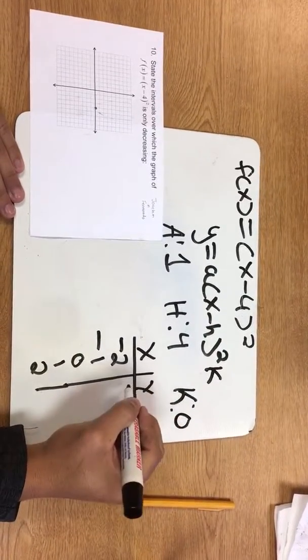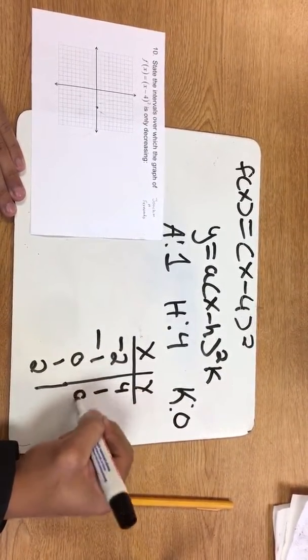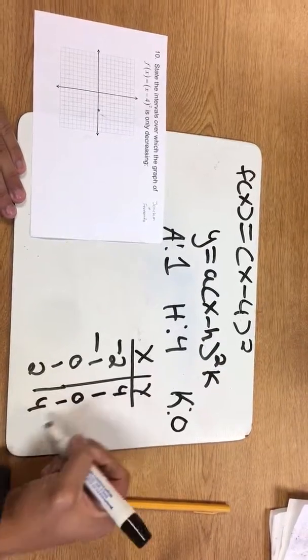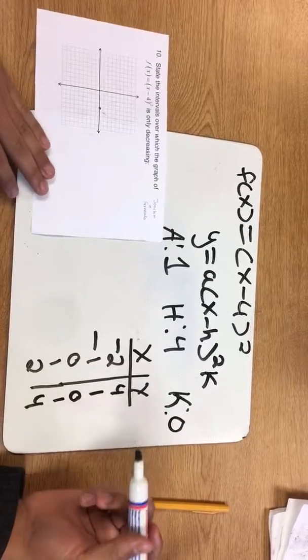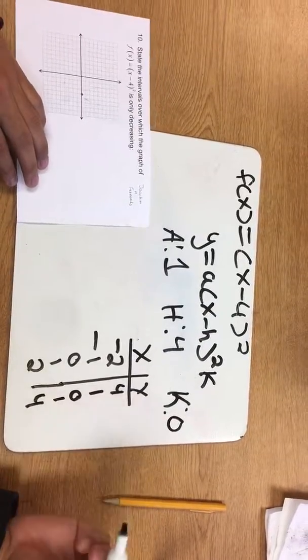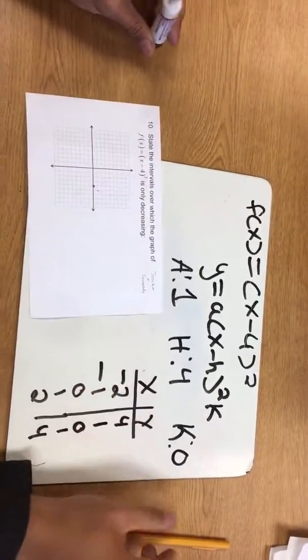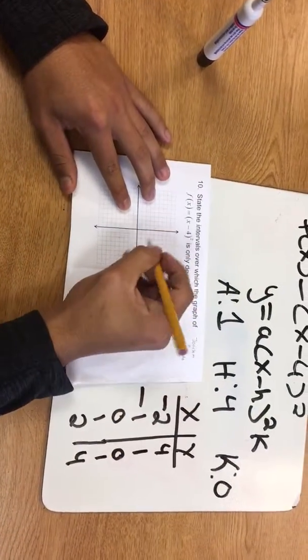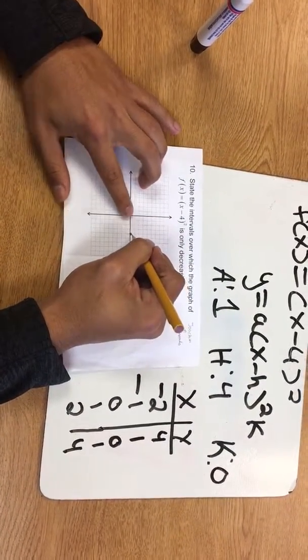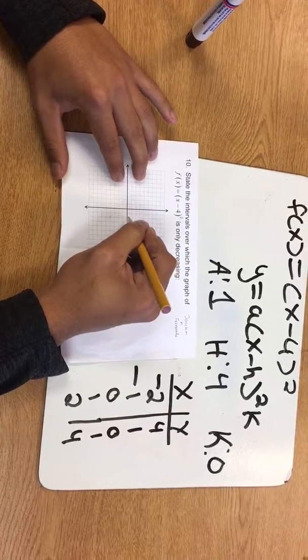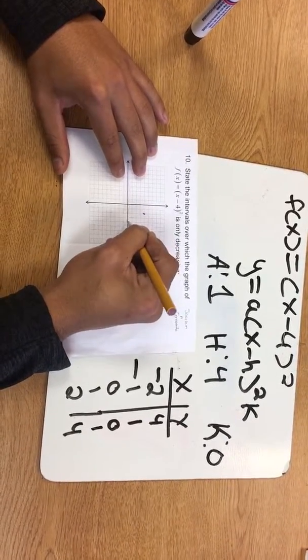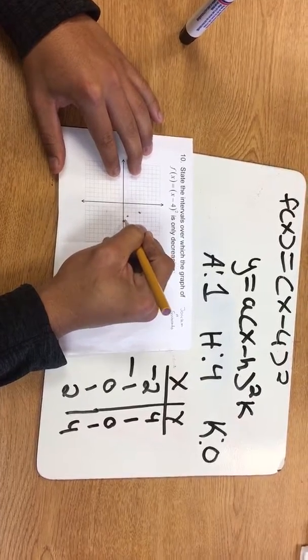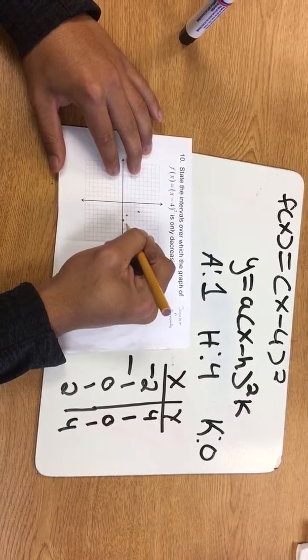Now we're going to square it, so negative 2, negative 1, 0, 1, 4 because they're all positive—negative 2 times negative 2 is positive, negative times negative is positive. Now we're going to plot them, so we start from the point that we had and go left two and up four, left one up one, zero, and over one up one.